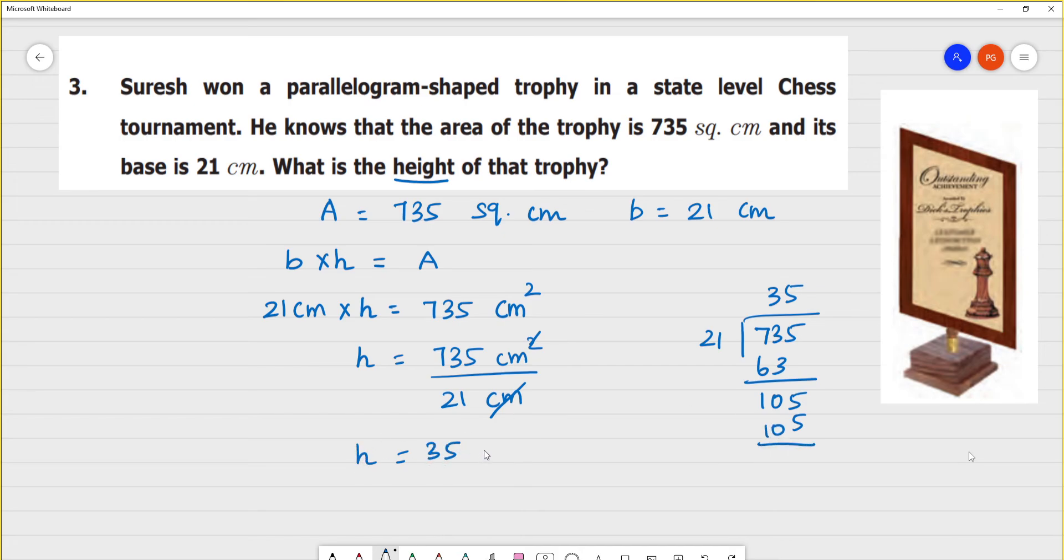So, h is equal to 35 centimeters. The height of the trophy is 35 centimeters.